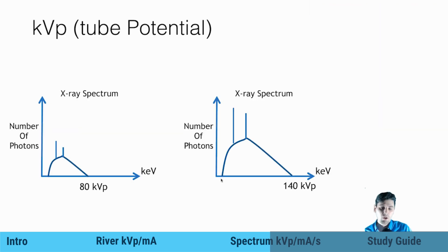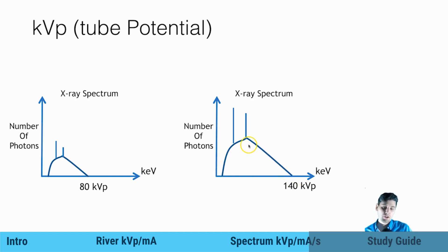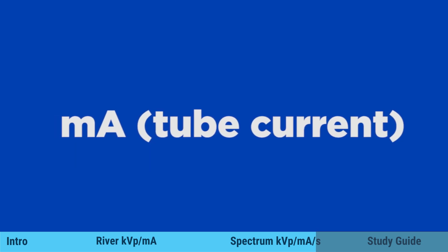This is a plot of the x-ray spectrum, with energy on this axis and the number of photons here. If you change the tube potential, you actually change the whole look of this spectrum. This plot is for 80 KVP — the maximum energy is 80 KEV, achieved because the potential across there is 80 KVP. If you change to 140 KVP, you can see a higher maximum potential and the volume under the curve is also much larger. There's a very strong dependence on KVP — it follows a power law of order between 2 and 3.